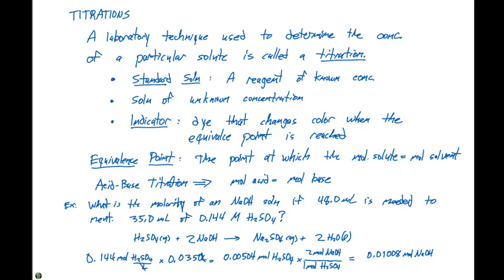In order to get the concentration of our sodium hydroxide, we need to divide it by the volume of our sodium hydroxide solution. And in this case, we're given 48.0 milliliters, or 0.0480 liters.